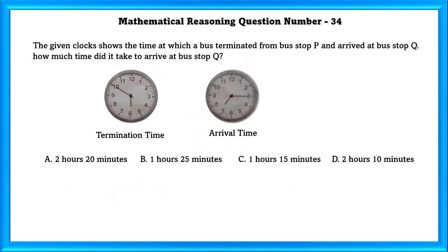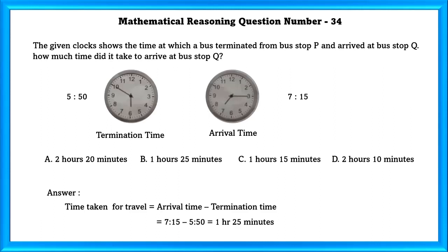Question No. 34: The given clock shows the time at which a bus departed from bus stop P and arrived at bus stop Q. How much time did it take? Departure time is 5:50 and arrival time is 7:15. Time taken equals arrival minus departure: 7:15 − 5:50 = 1 hour 25 minutes, which is option B.